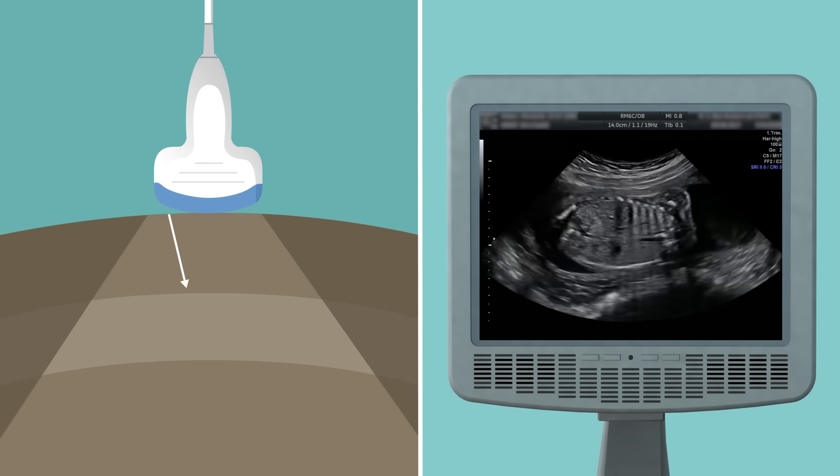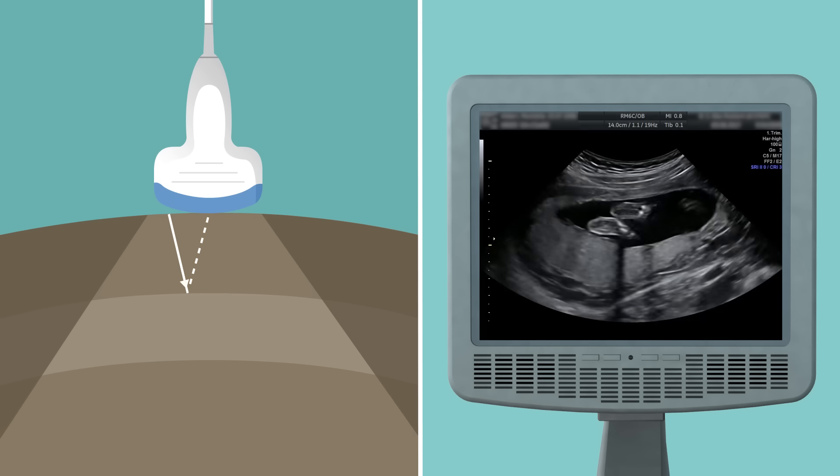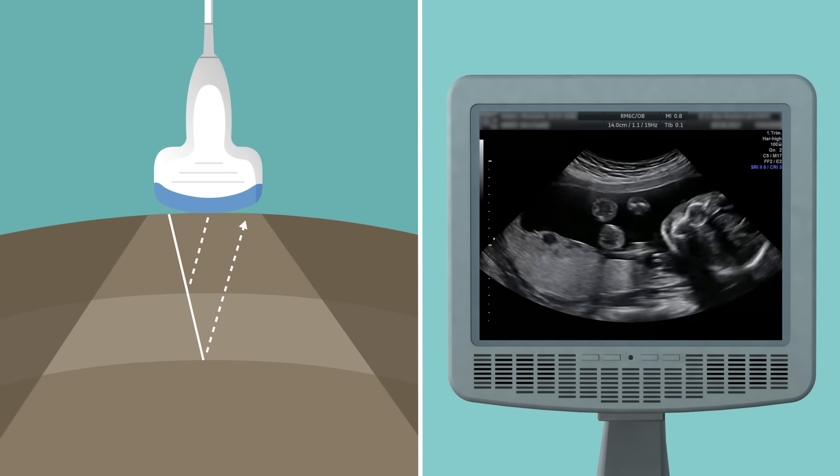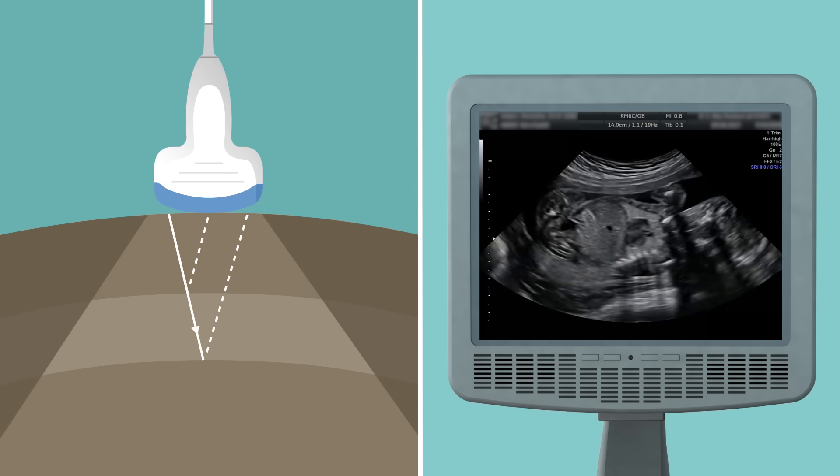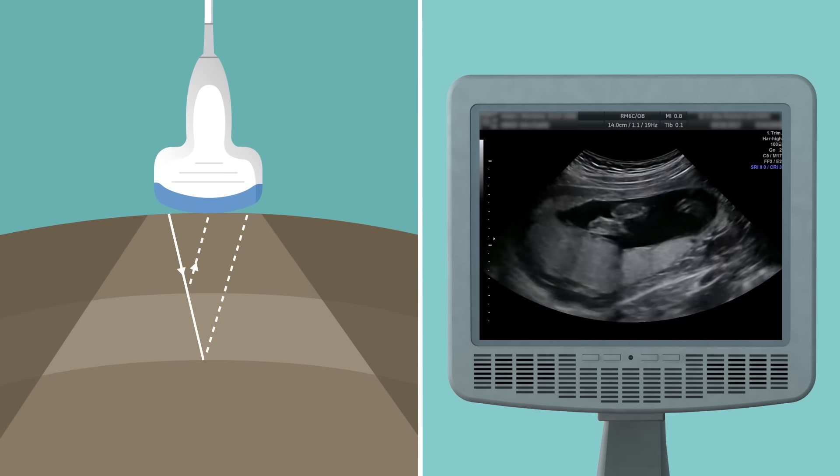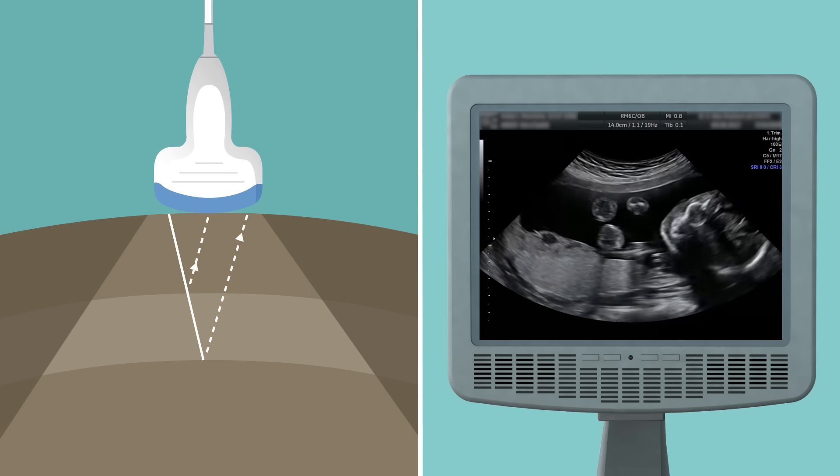The ultrasound machine calculates the depth of each boundary by measuring the time taken for each reflected wave to return. The deeper the layer, the longer it takes for each signal to return.